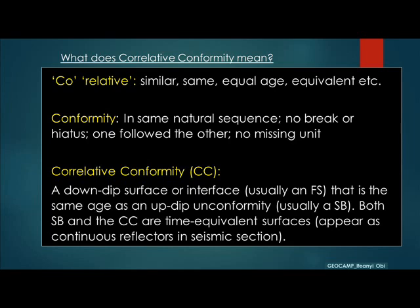If we have two items, 1 and 2, or A and B — if we're saying A and B are in conformity, that means after A comes B, or after 1 comes 2, there is nothing in the middle. That means there's nothing missing between the two of them.